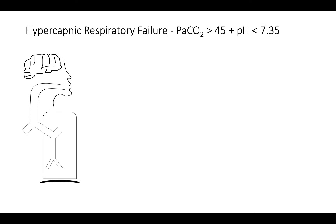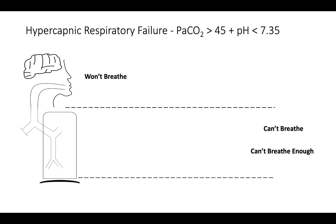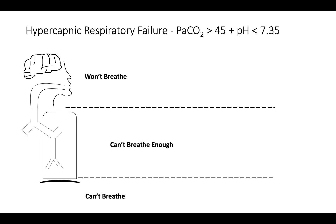When constructing a differential for acute hypercapnic respiratory failure, it is easiest to think about pathology that causes a decrease in tidal volume, respiratory rate, or both. A good way to think about this is the 'won't breathe, can't breathe, and can't breathe enough' schema. This schema breaks down hypercapnic respiratory failure into CNS, neuromuscular, and pulmonary etiologies.